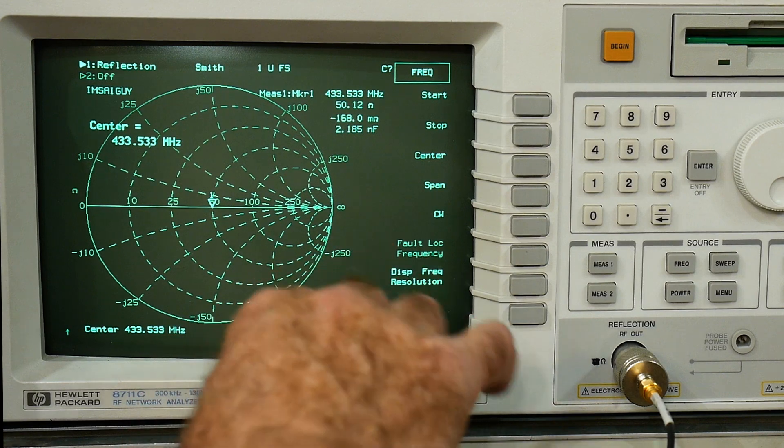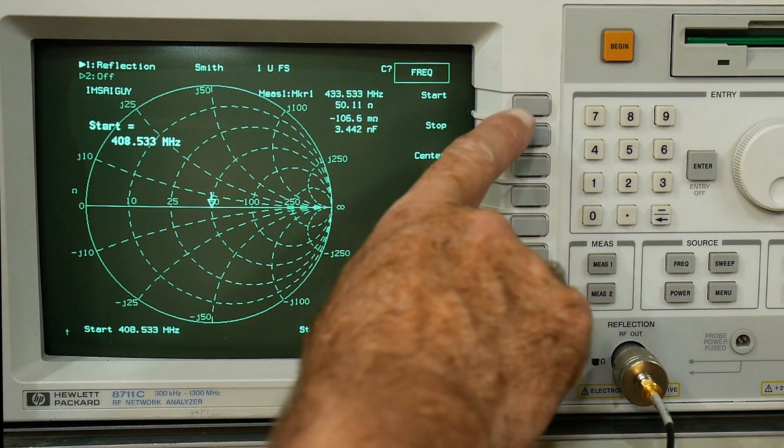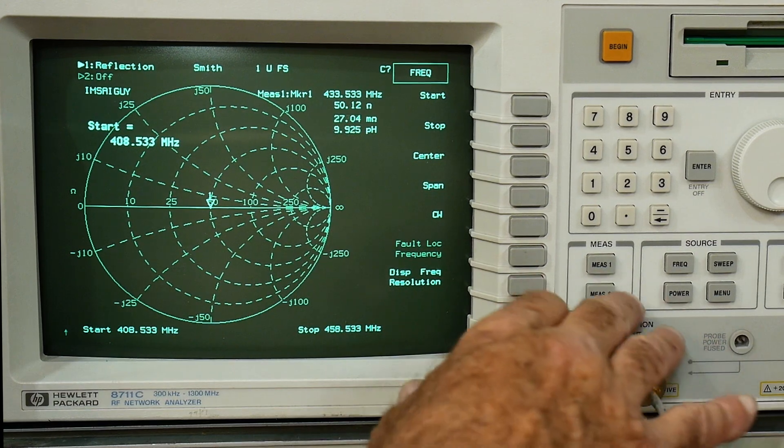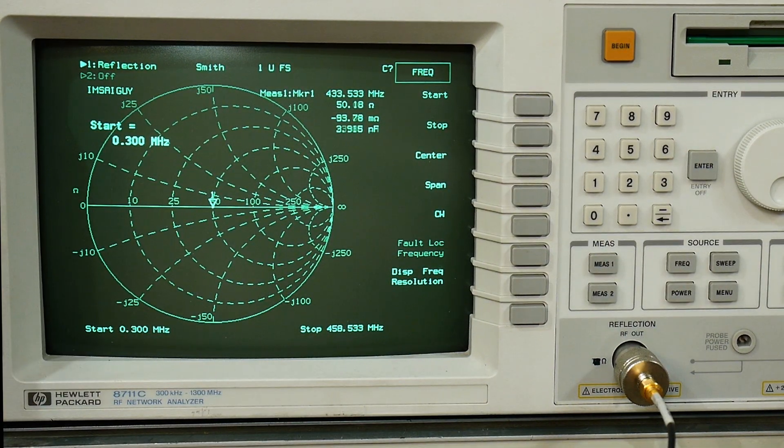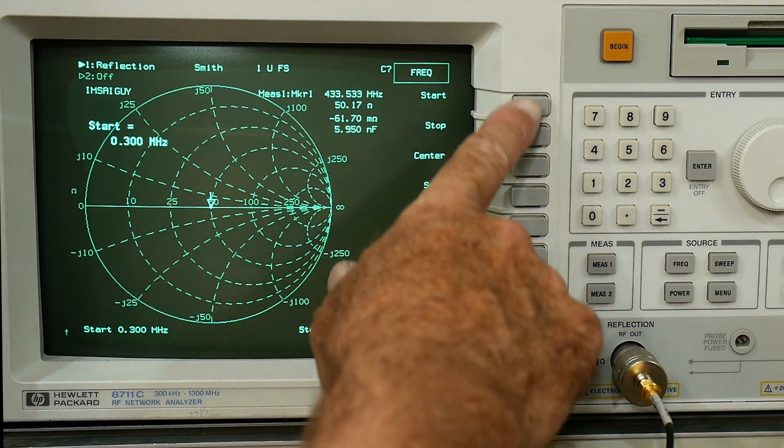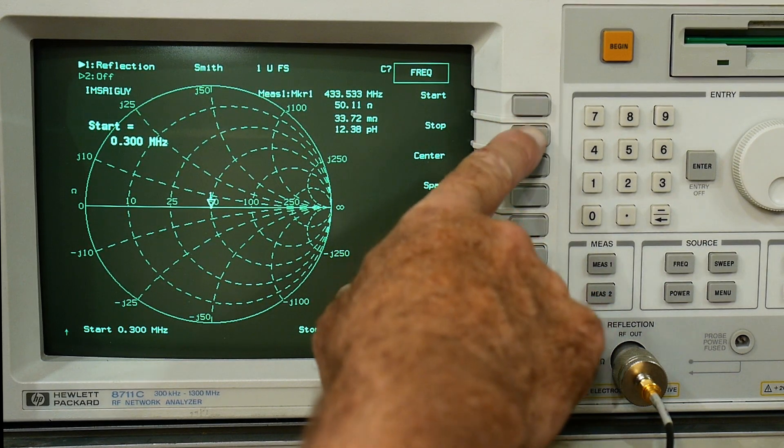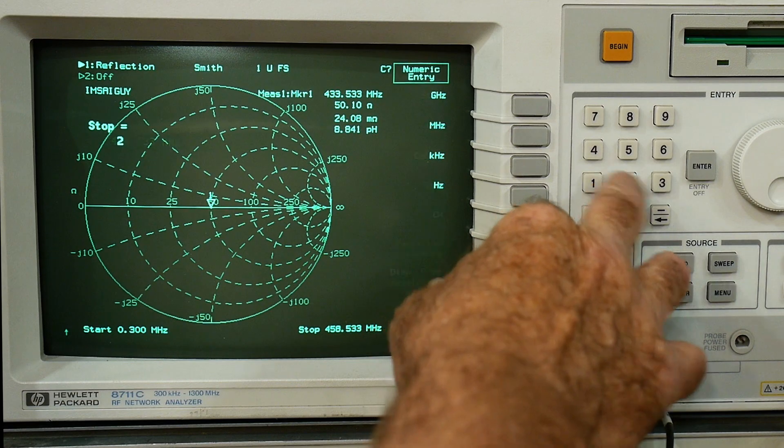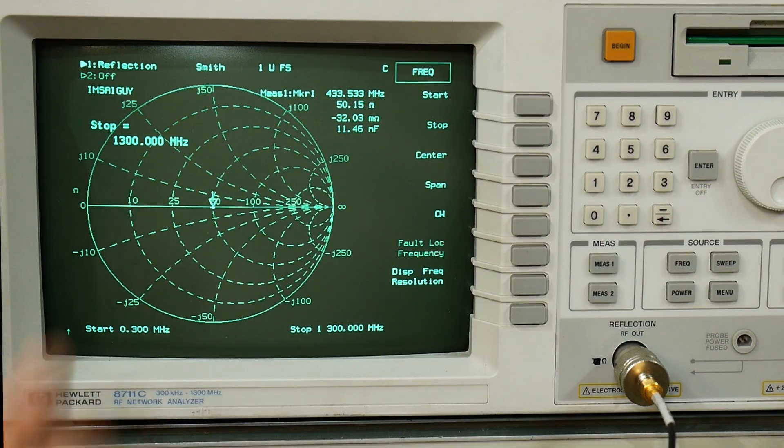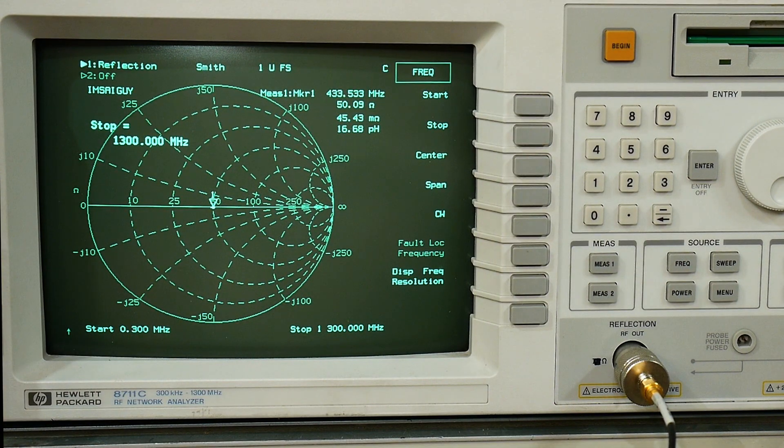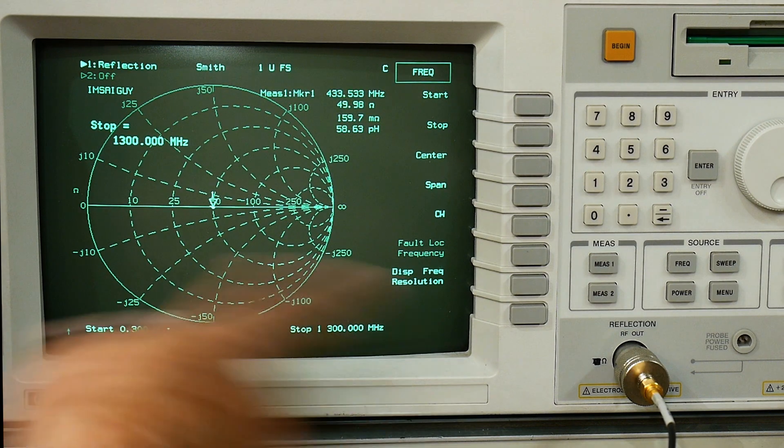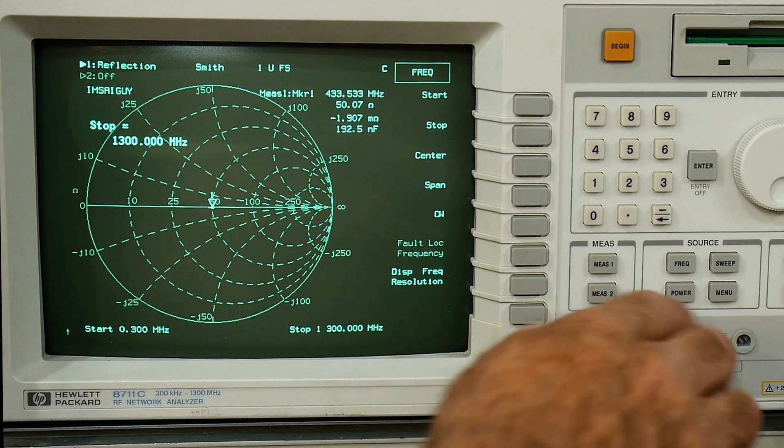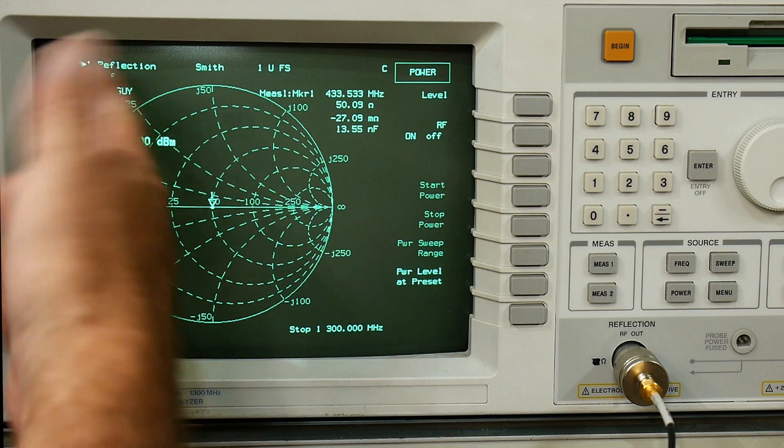The frequencies: you can do a start frequency of 0.300 kilohertz is as low as it goes and we'll do a stop frequency. It's 1.3 so it goes from 0.3 to 1.3, 0.3 megahertz to 1.3 gigahertz. So that's its range.